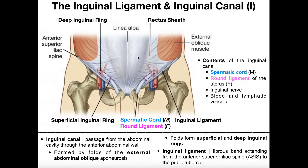So why do we need an inguinal canal? Women have one as well, but I'll use a male example because it's more obvious. Males carry their reproductive organs — the testes — on the outside, contained in a sac called the scrotum. The testes are manufacturers of sperm cells.